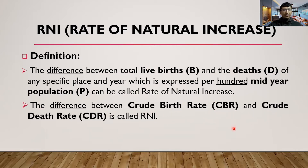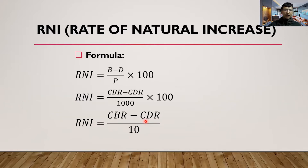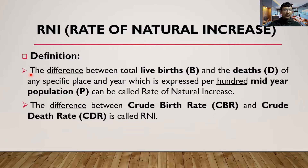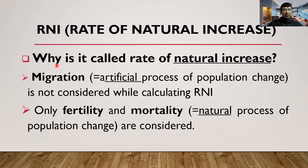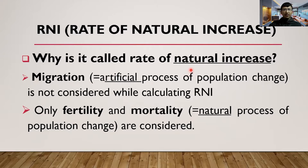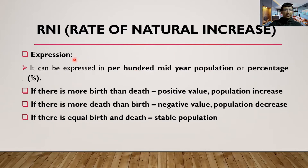Alternatively, the difference between Crude Birth Rate and Crude Death Rate can also be called RNI. You can use either definition. The reason it is called the 'rate of natural increase' is that migration is not considered — migration is an artificial process of population change, while fertility and mortality are natural processes. Therefore, only CBR and CDR are used.